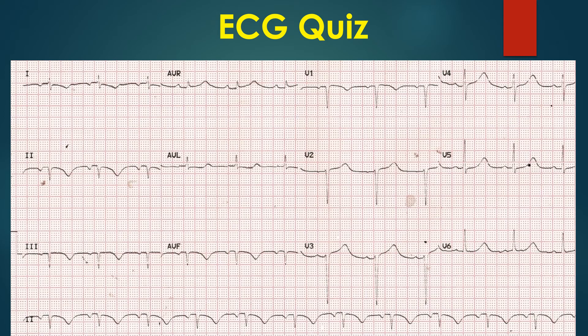Coming back to the initial observations, what looks like an inferior wall myocardial infarction with a rhythm other than sinus rhythm with an abnormal P-wave axis can occur when the right arm and left leg leads are reversed while recording the ECG. The simplest way to check for lead errors is to take a repeat ECG under direct observation and compare the tracings. In this case, the inferior wall infarction pattern and abnormal P-wave axis reverted in the repeat ECG.